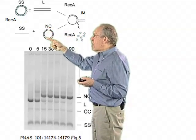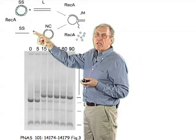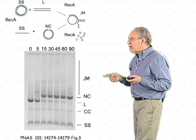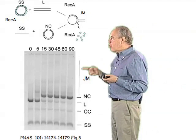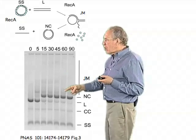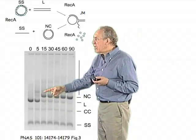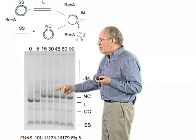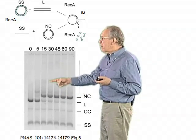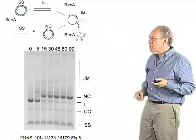This process will continue all the way around until the circle is complete. One ends up with a nicked circle, illustrated as NC, and with a displaced single-stranded piece of DNA. Those things can be seen here on an agarose gel, which is probed for the presence of these particular molecules. We start out with single-stranded DNA at the bottom, there's the double-stranded DNA, and then you can see the appearance of the nicked circle product. Above it, kind of smeared out, are these joint molecules or intermediates of the strand exchange.